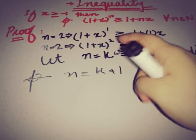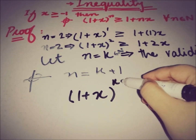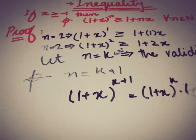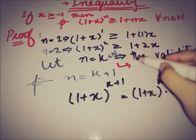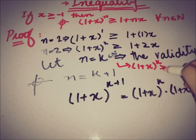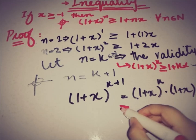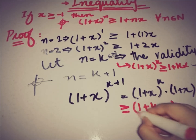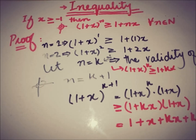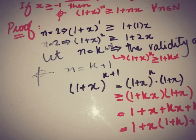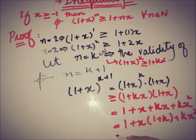Putting n equal to k plus 1 in the inequality, on the left hand side we have 1 plus x to the power k plus 1, which we write as 1 plus x to the power k, times 1 plus x. Using the inductive hypothesis that 1 plus x to the power k is greater than or equal to 1 plus kx, this becomes greater than or equal to 1 plus kx times 1 plus x. Expanding: 1 times 1 gives 1, 1 times x gives x, kx times 1 gives kx, and kx times x gives kx squared. Collecting terms with x common, we get 1 plus k plus 1 times x plus kx squared.